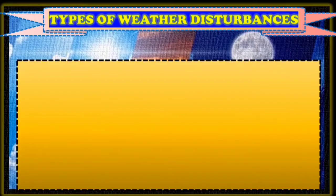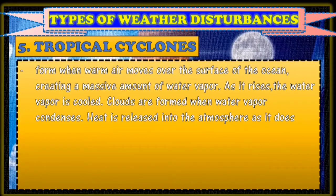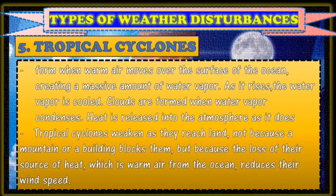Number five is tropical cyclones. They form when warm air moves over the surface of the ocean, creating a massive amount of water vapor. As it rises, the water vapor is cooled. Clouds are formed when water vapor condenses, and heat is released into the atmosphere. Tropical cyclones weaken as they reach land not because a mountain or a building blocks them, but because the loss of their source of heat — warm air from the ocean — reduces their wind speed.